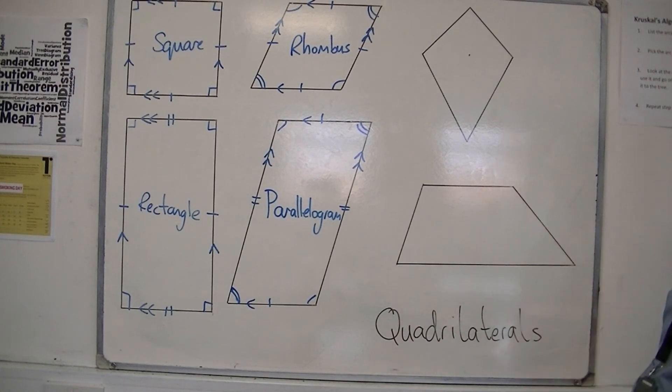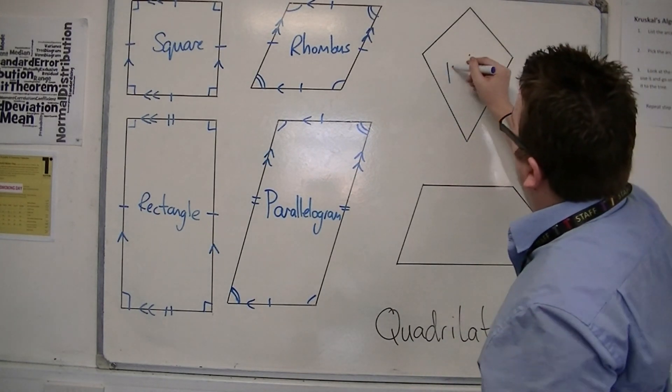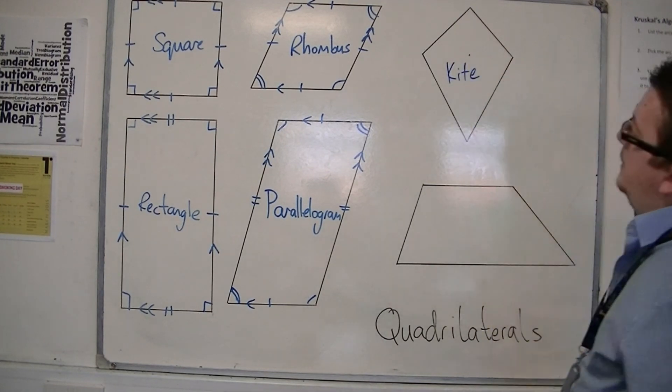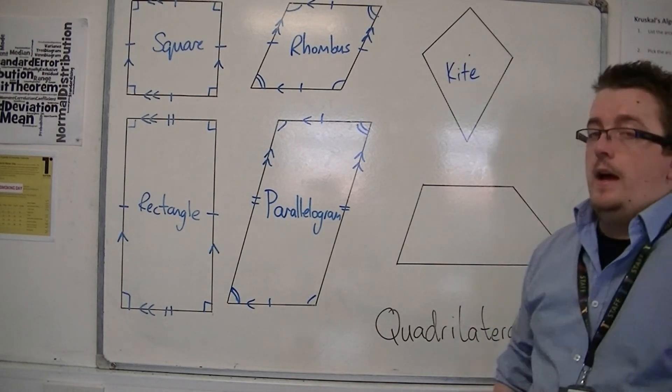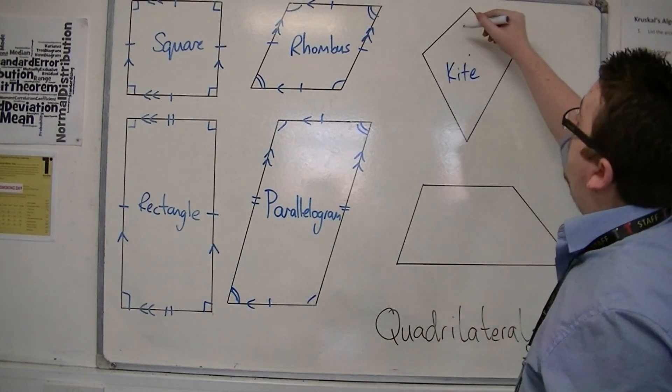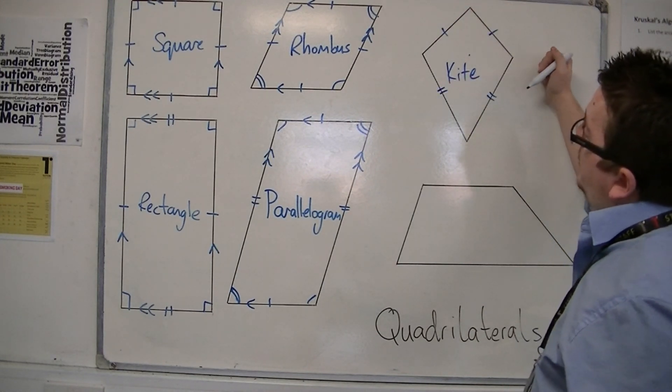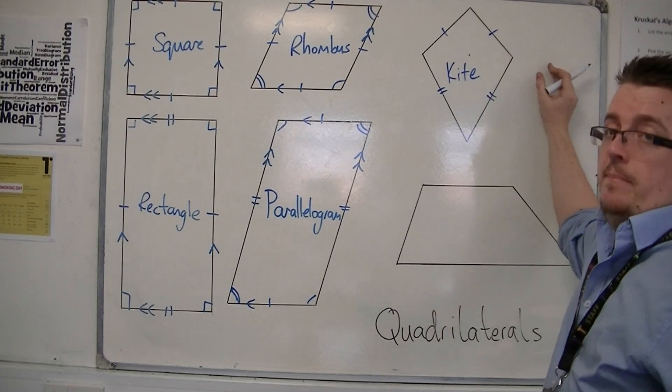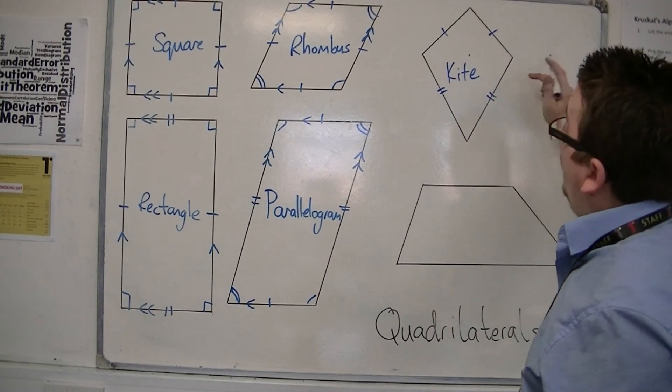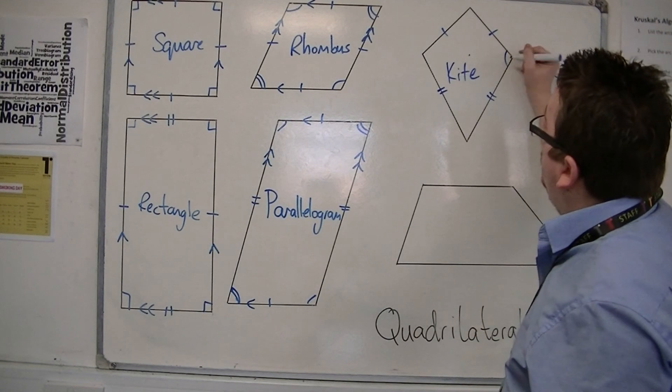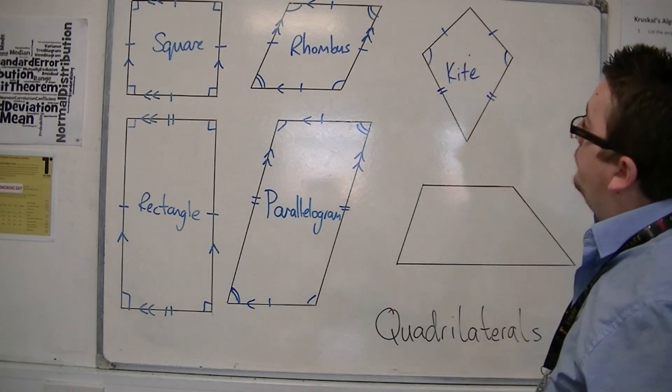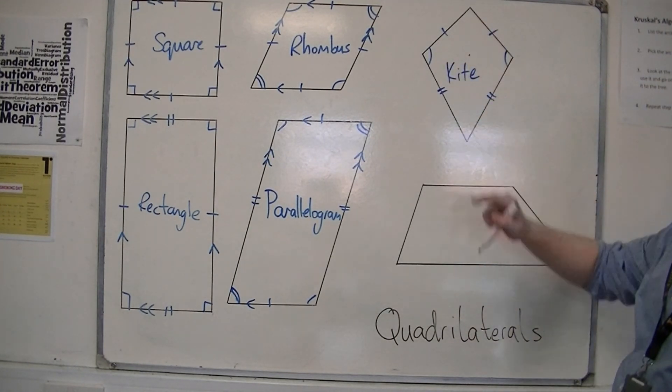So, then we have the kite. Now, the kite has some sides the same length. It has those two the same length. And these two are the same length. It doesn't have any right angles. It doesn't have any parallel sides. It does have one key fact that these two angles are the same size. These two, however, are not in general.